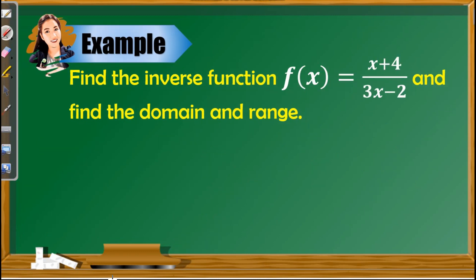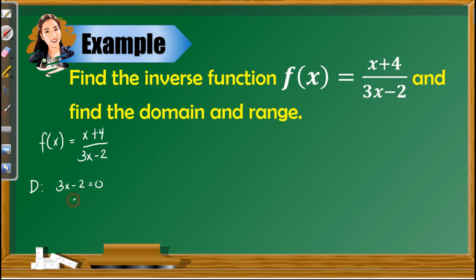For our third example: find the inverse of f(x) = (x + 4)/(3x − 2) and find the domain and range. First, find the domain and range of the given function. This is a rational function. The domain consists of real numbers excluding the value that makes the denominator 0, given by 3x − 2 = 0. Solving: 3x = 2, so x = 2/3. This is the value that must be excluded from the domain.